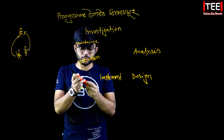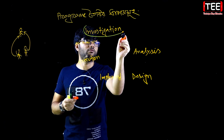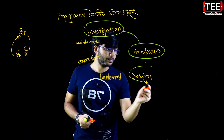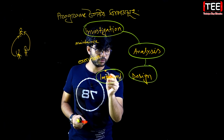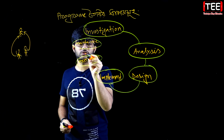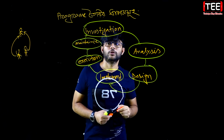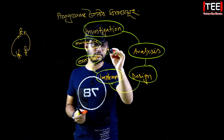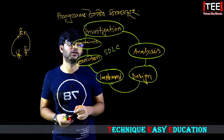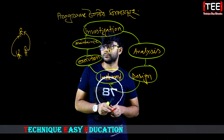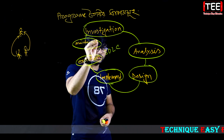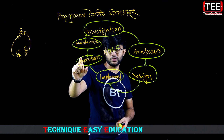First of all, we have an investigation, then analysis, then design, then implementation, then execution, and then maintenance. The whole fact is the SDLC — Software Development Life Cycle. So you will need to investigate, analyze, design, implement, and maintain.